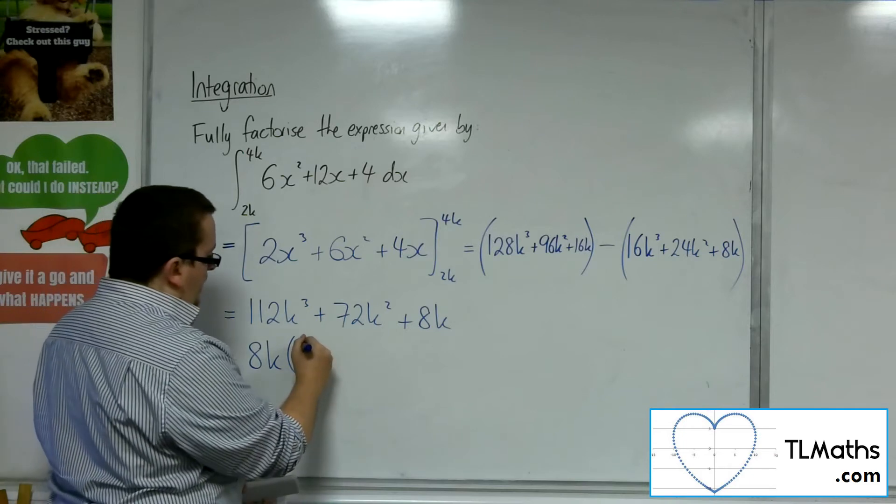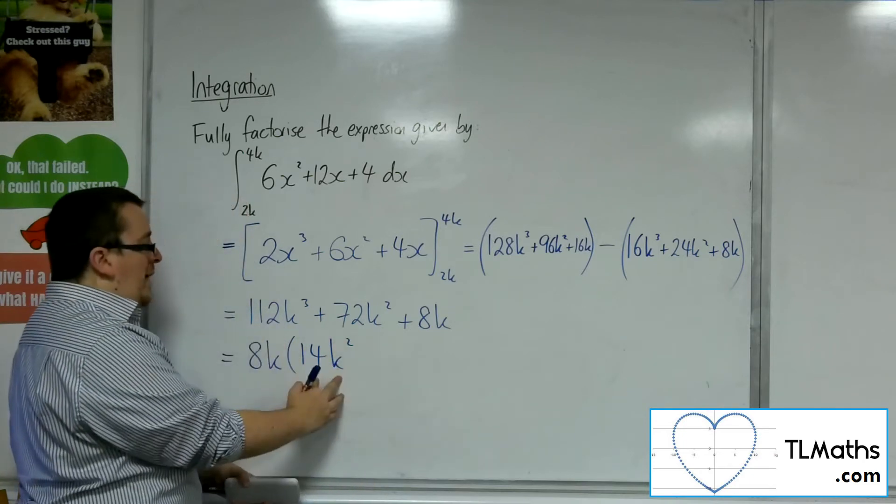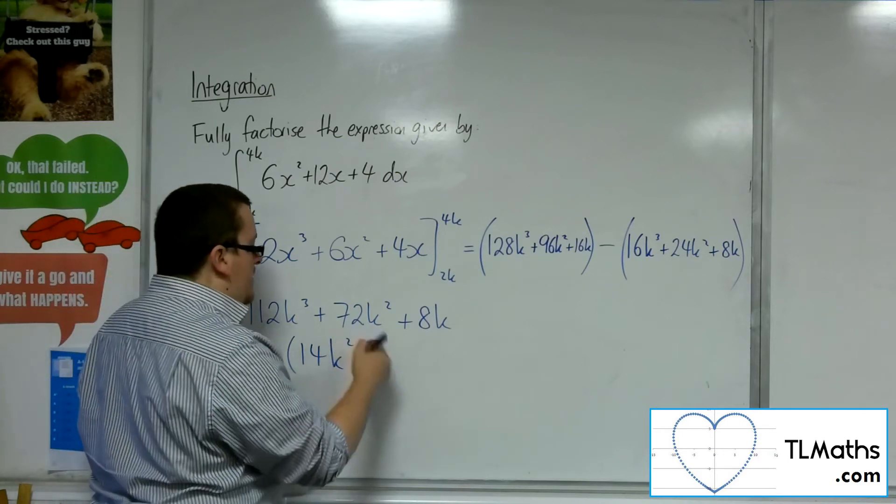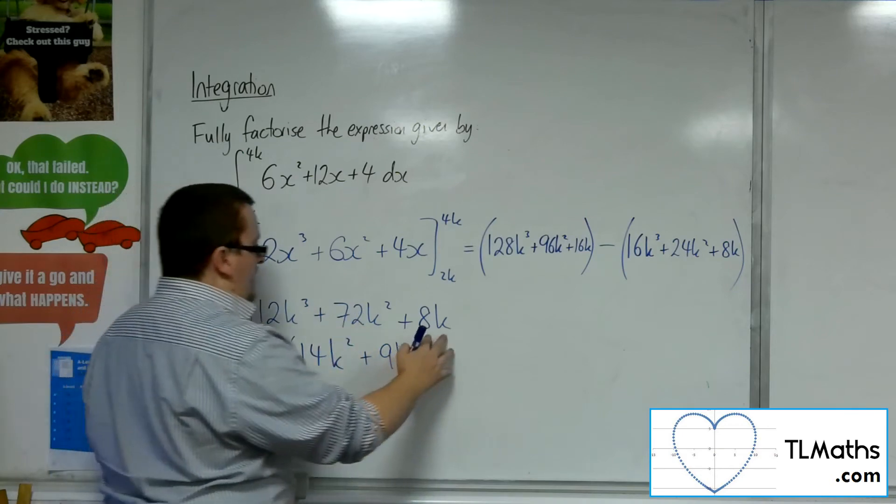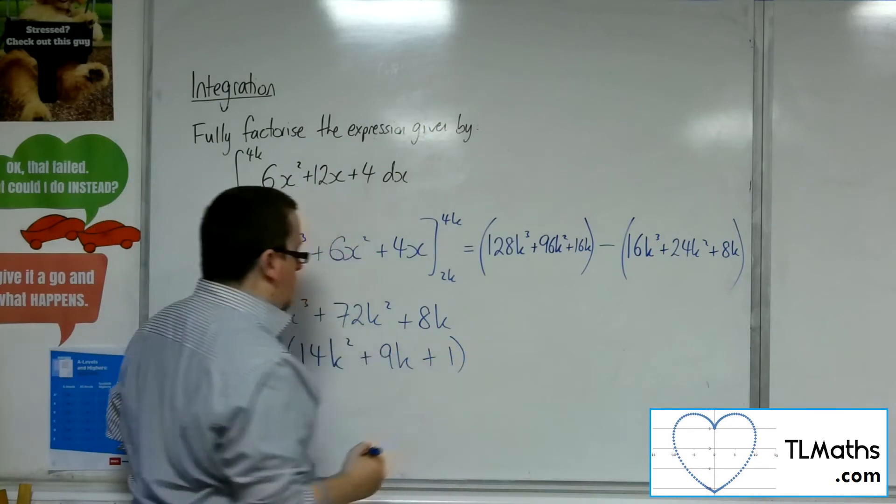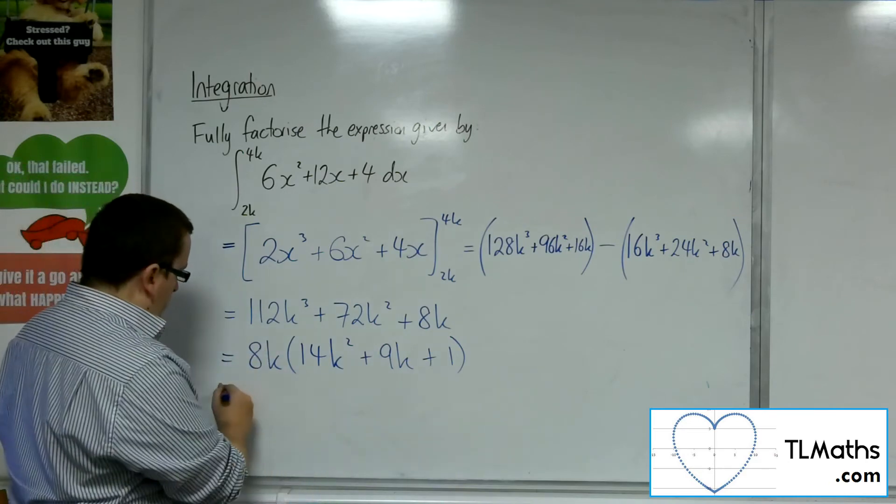Now 112 divided by 8 is 14, so we'll have 14k squared left. 72 divided by 8 is 9, so we'll have 9k left there. And then we'll have the single 1 there. We're not done yet though.